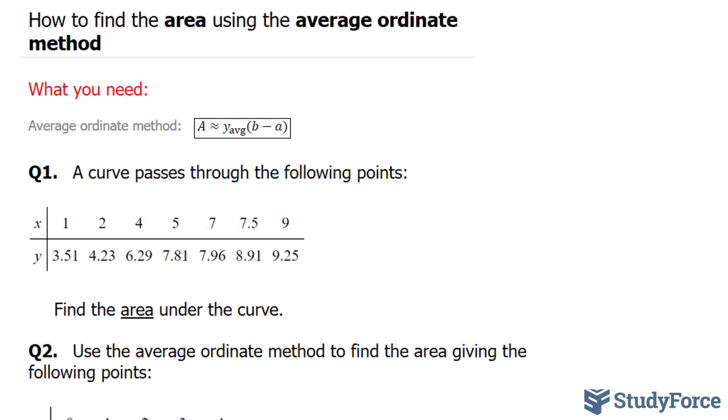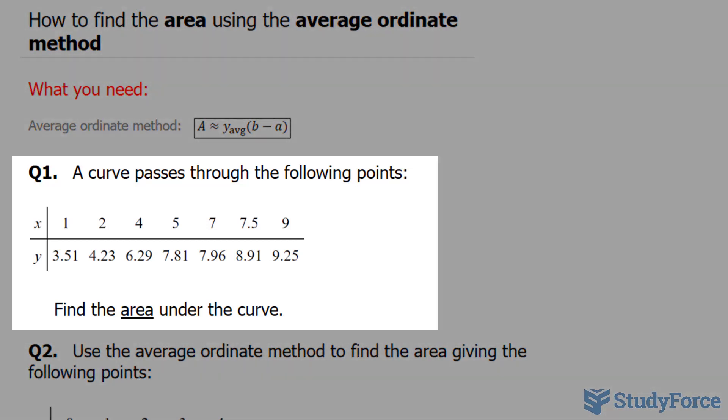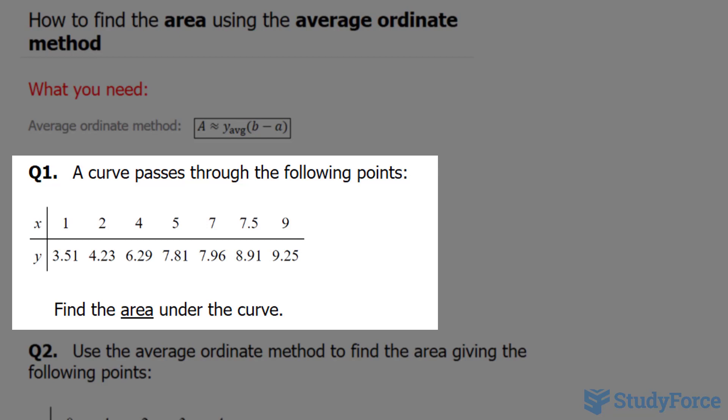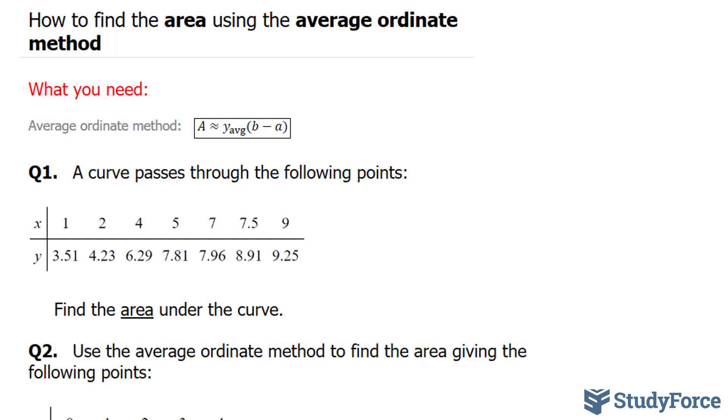In this lesson, I'll show you two examples on how to find the area using the average ordinate method. Question 1 reads, a curve passes through the following points shown in this table. We have to find the area underneath the curve.